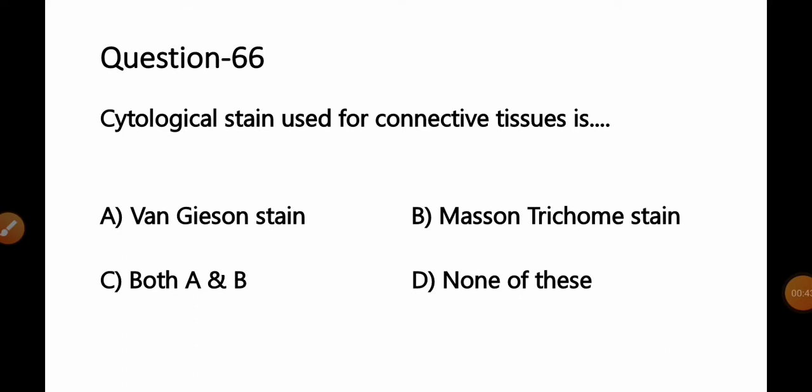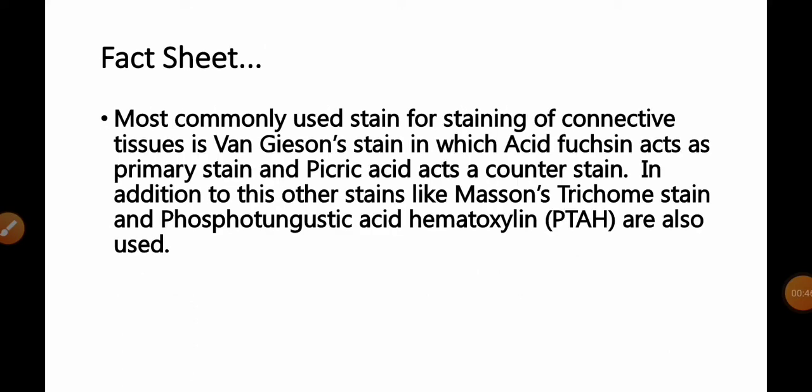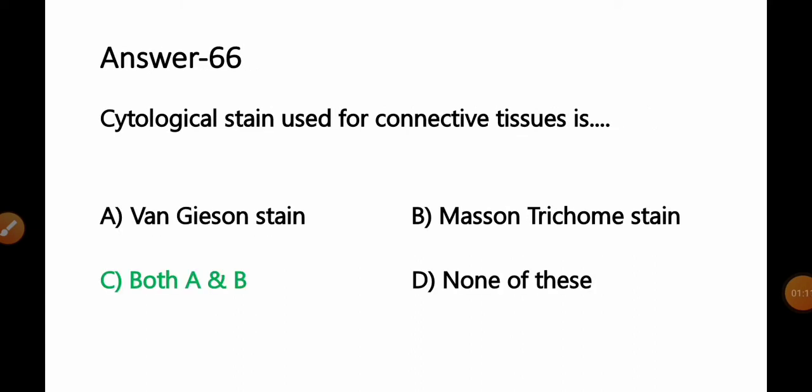The most commonly used stain for staining of connective tissues is Van Gesson stain, in which acid fuchsin acts as a primary stain and picric acid acts as a counter stain. In addition to these, other stains like Masson's Trichrome stain and phosphotungstic acid hematoxylin stain are also used for staining of connective tissues. So both Van Gesson stain and Masson's Trichrome stain are used — Option C, both A and B, is the correct answer.